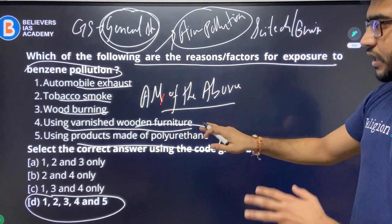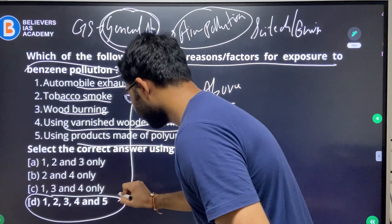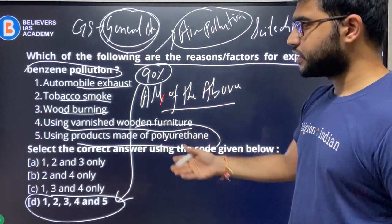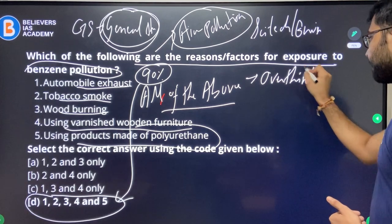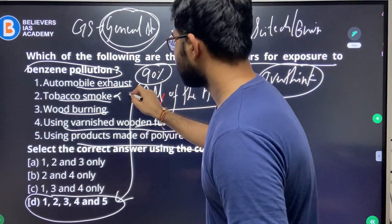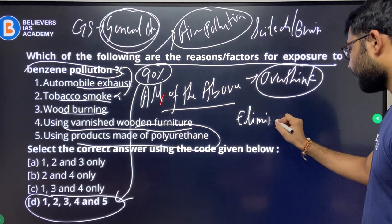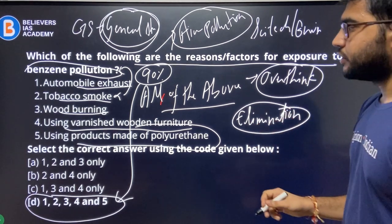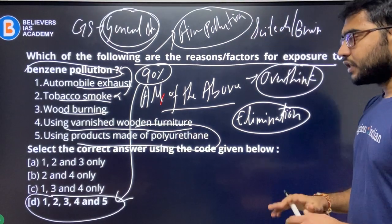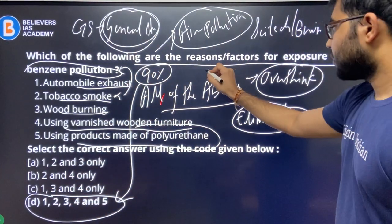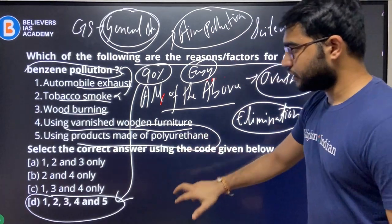UPSC's examination is General Studies — GS Paper 1. UPSC is not expecting you to be an expert in environment or biotechnology; they expect general knowledge about all subjects. In this kind of question, 90% of the time the answer is 'all of the above'. So if you encounter such a question in the examination hall, don't overthink. If you try to eliminate options — asking yourself 'how can tobacco smoke be a source of benzene pollution?' — I call that the elimination syndrome. Just apply common sense and go with D.